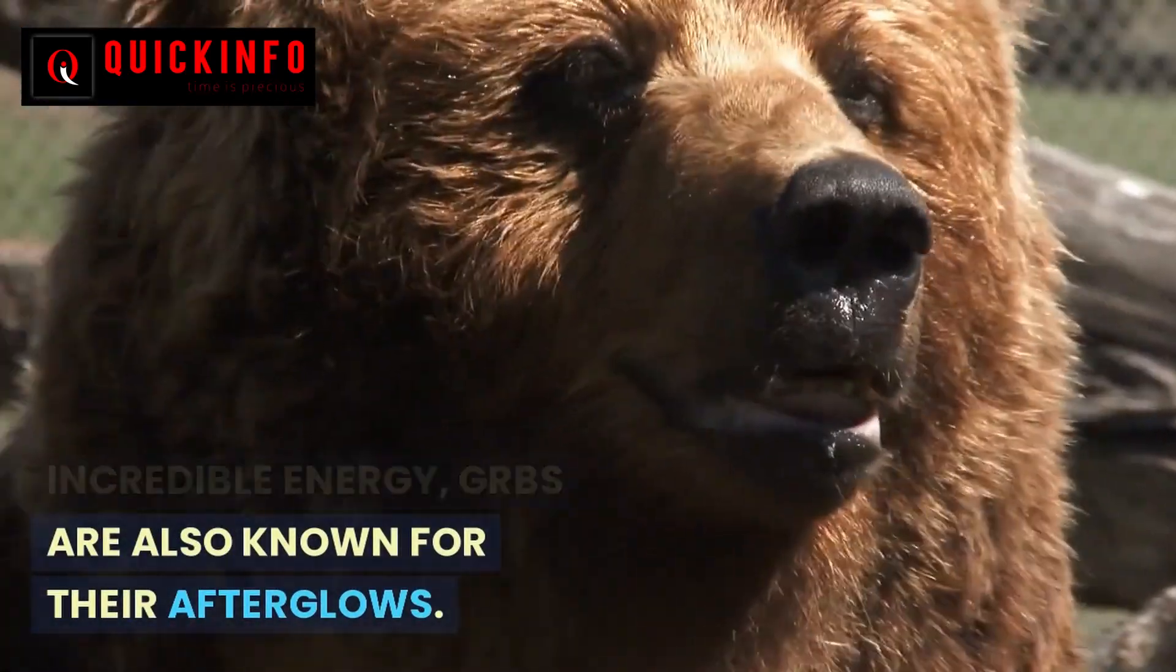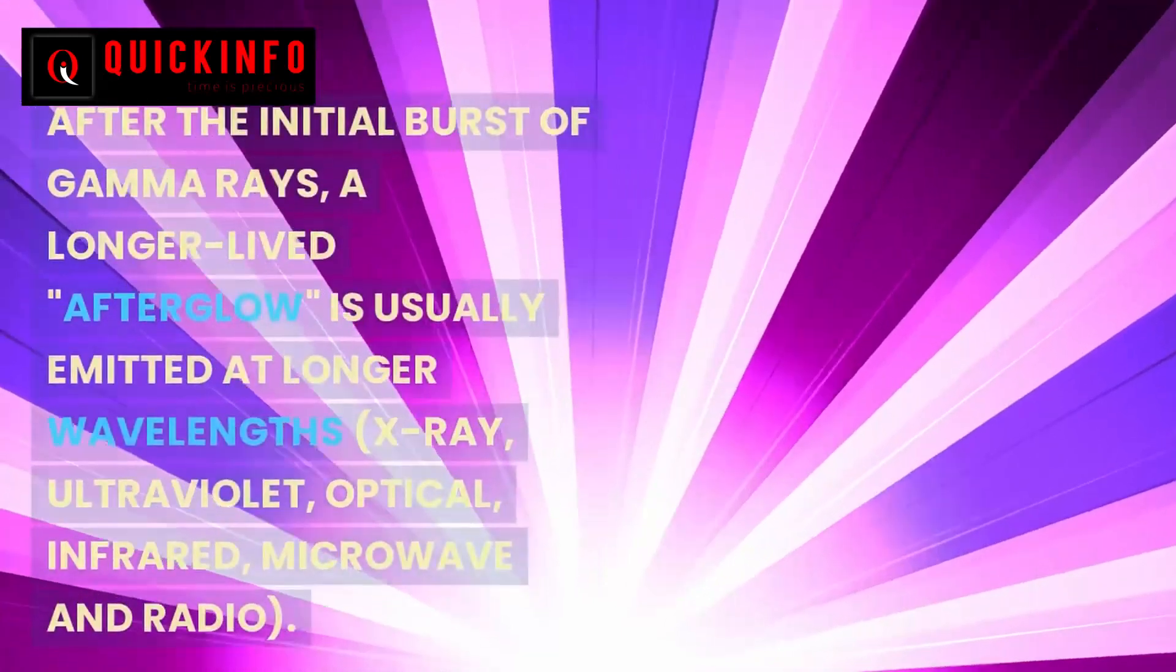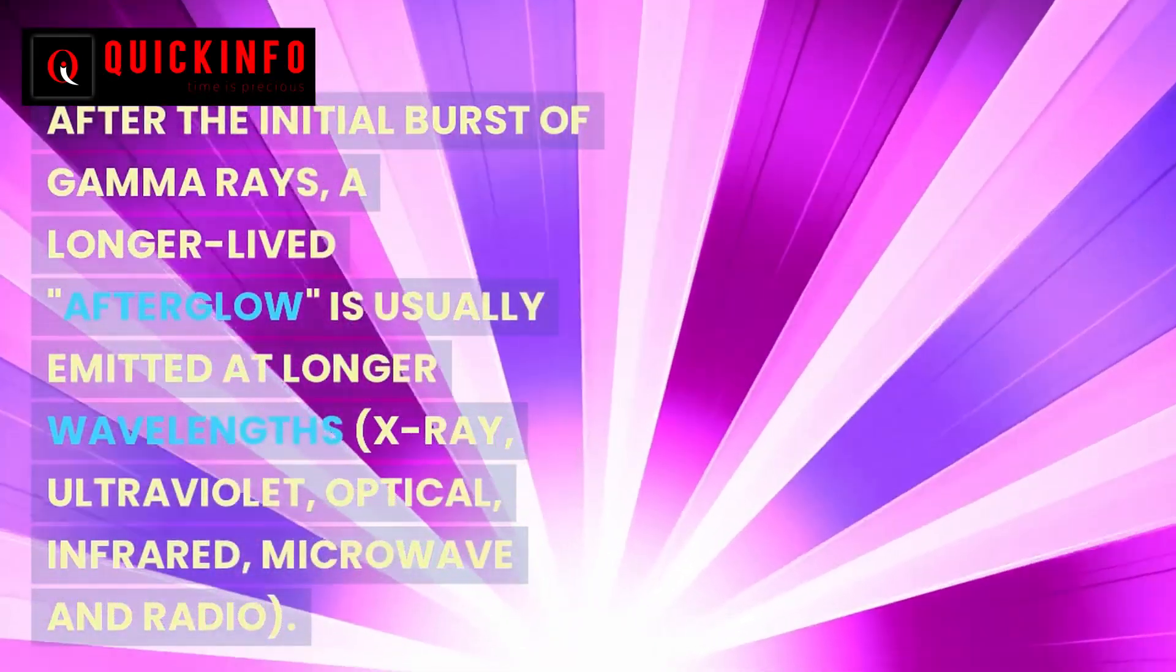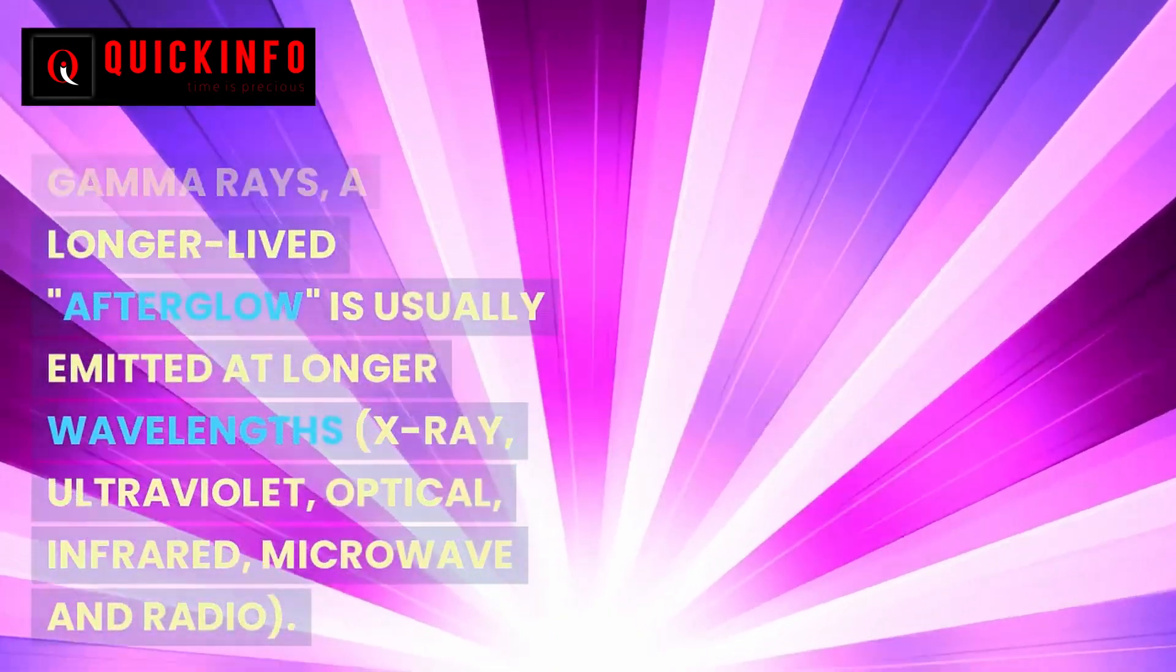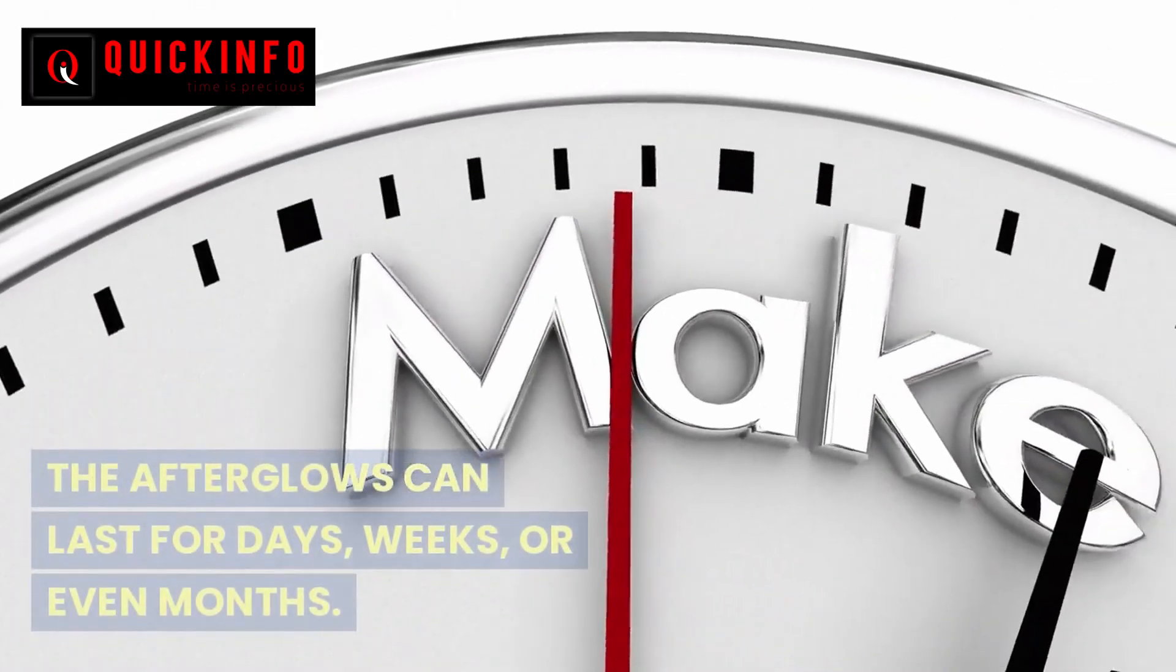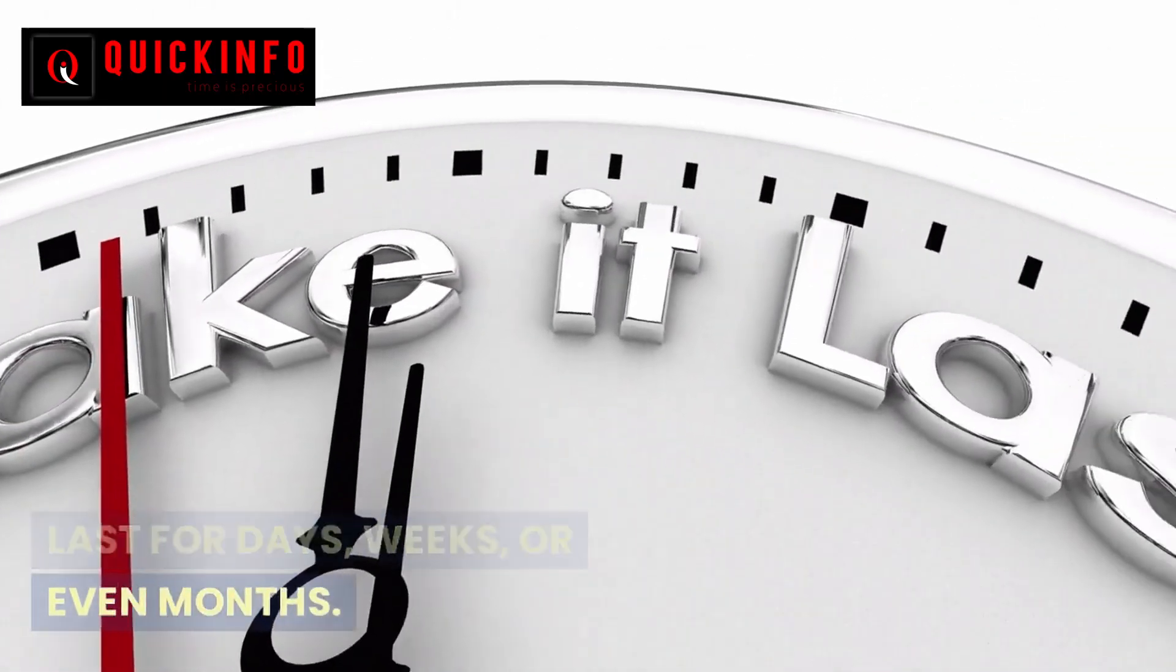After the initial burst of gamma rays, a longer-lived afterglow is usually emitted at longer wavelengths: X-ray, ultraviolet, optical, infrared, microwave, and radio. The afterglows can last for days, weeks, or even months.